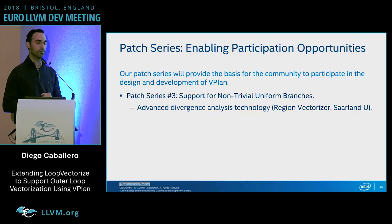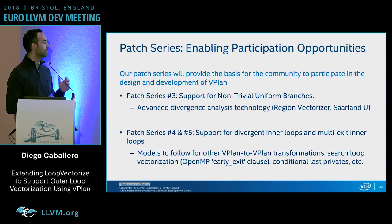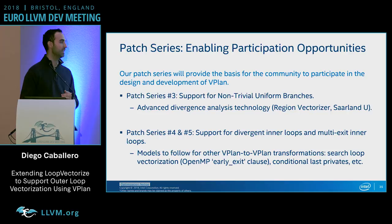Regarding patch series four and five, we are introducing sophisticated vPlan-to-vPlan transformations that could serve as a model for other transformations. At this point we'll have the infrastructure to build search loop vectorization and more complicated features, such as support for loops with conditional last private variables and many more.